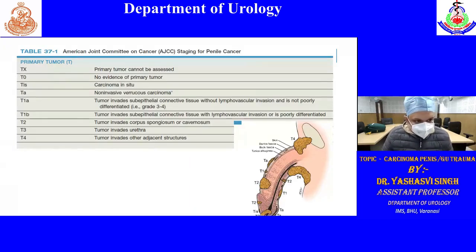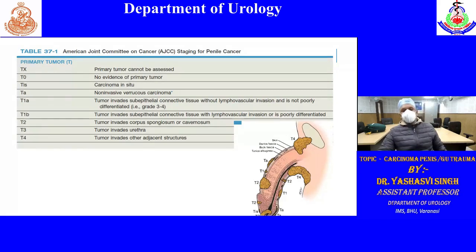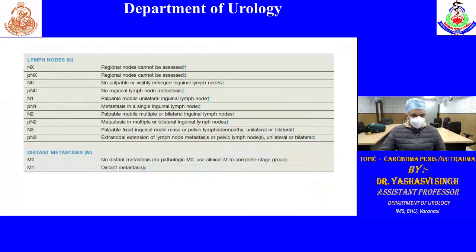T-staging: Ta is non-invasive verrucous carcinoma. Tis is carcinoma in-situ. T1a and T1b: tumour invades sub-epithelial connective tissue; differentiating point is vascular invasion. T2 is invasion of corpus spongiosum or cavernosum. T3 is invasion of the urethra. T4 involves adjacent tissues. For lymph nodes: N1 is palpable mobile unilateral inguinal node; N2 is palpable mobile multiple or bilateral nodes; N3 is palpable fixed nodes. M1 is distant metastasis.